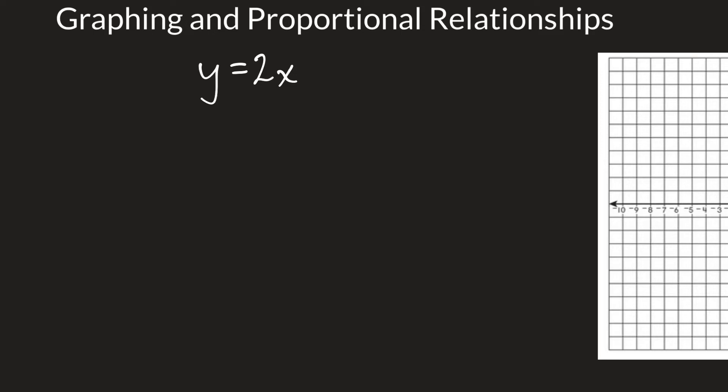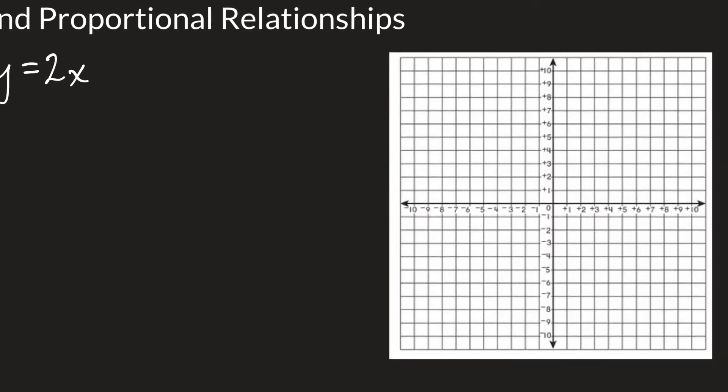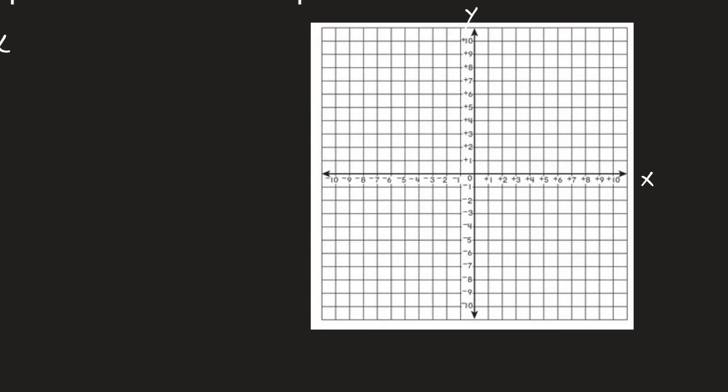Hi and welcome to graphing proportional relationships. We're going to graph the proportional relationship y equals 2x, where every y value is two times the x value. We will often graph these, and as you can see the horizontal axis shows the x values and the vertical axis shows the y values.